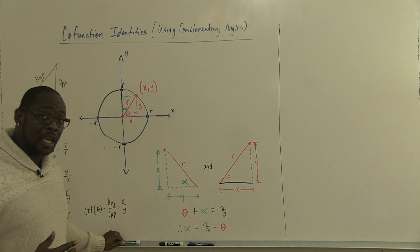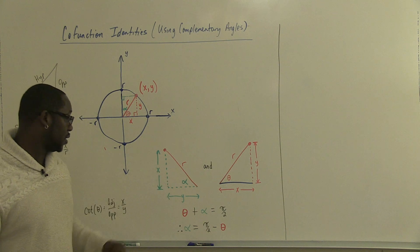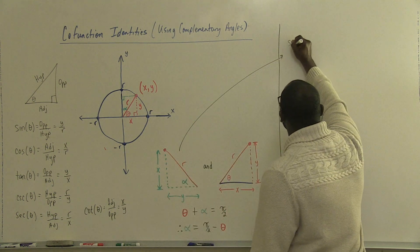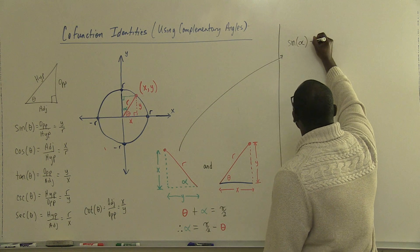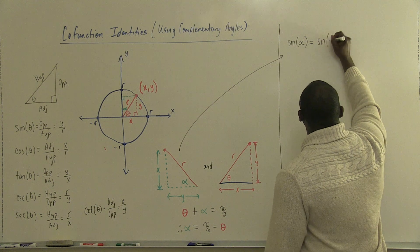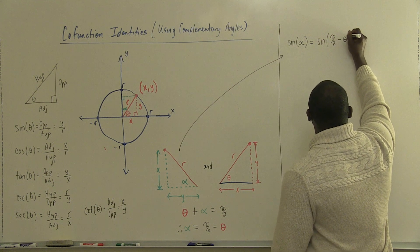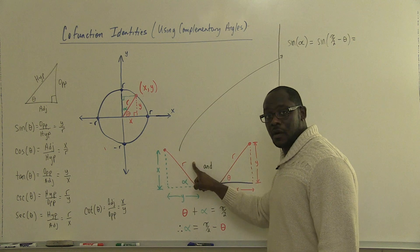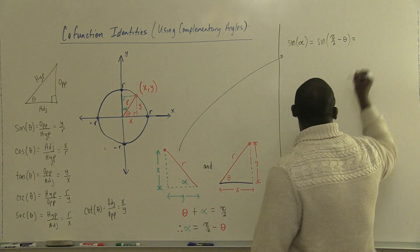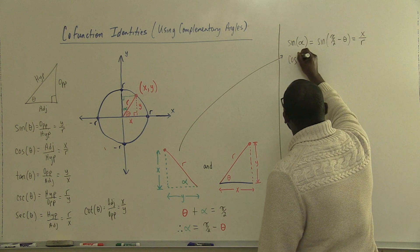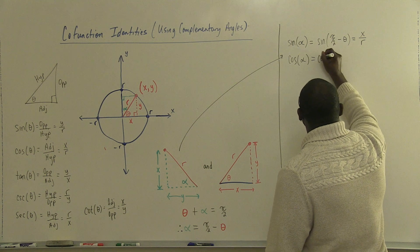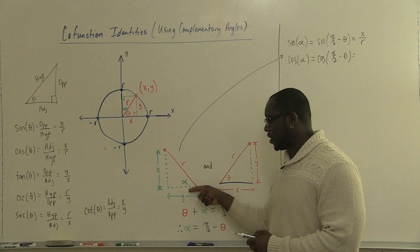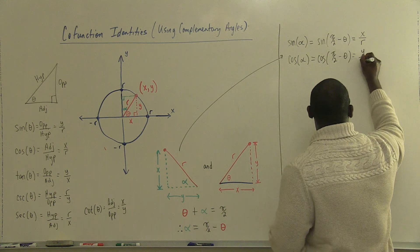If we look at the same relationships but in terms of this second right triangle, here's what we get. Sine of alpha — which is the same as sine of pi over 2 minus theta — is x divided by r, since sine is opposite over hypotenuse. Cosine of alpha, the same as cosine of pi over 2 minus theta, gives us y divided by r, since cosine is adjacent over hypotenuse.